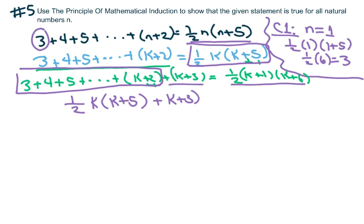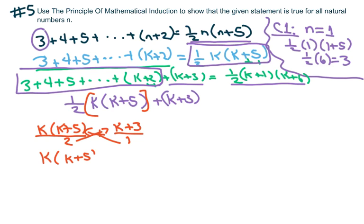This 1/2 only goes with this portion here, so I'm going to write this as k times k plus 5 over 2 plus k plus 3. I want to get the common denominator, so that's going to be k times k plus 5 plus 2 times k plus 3.